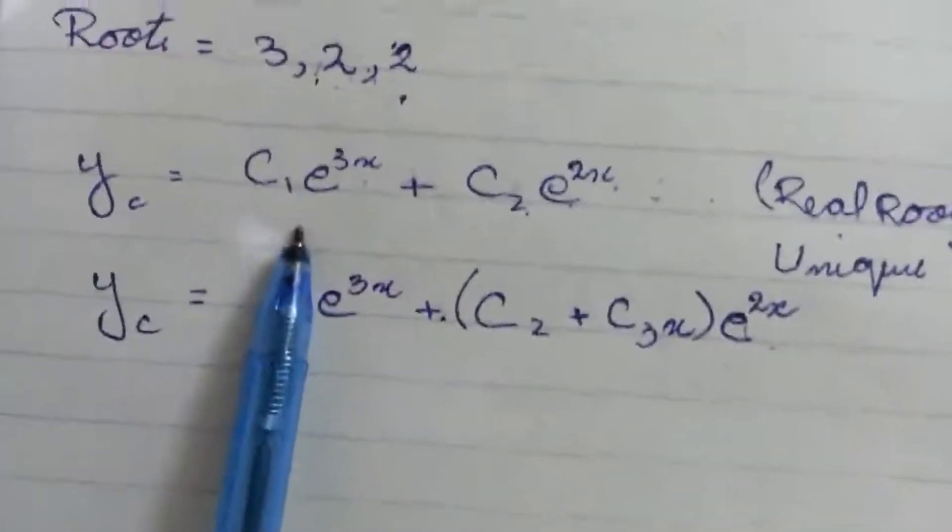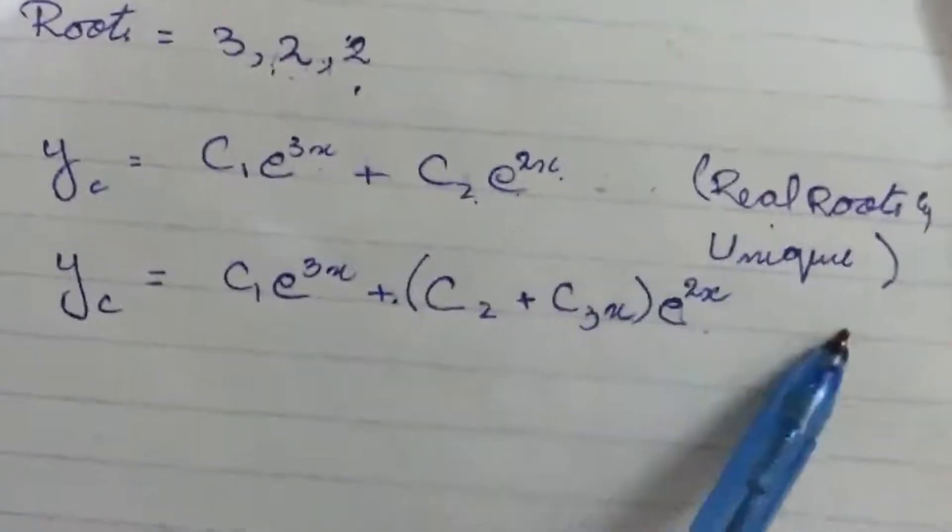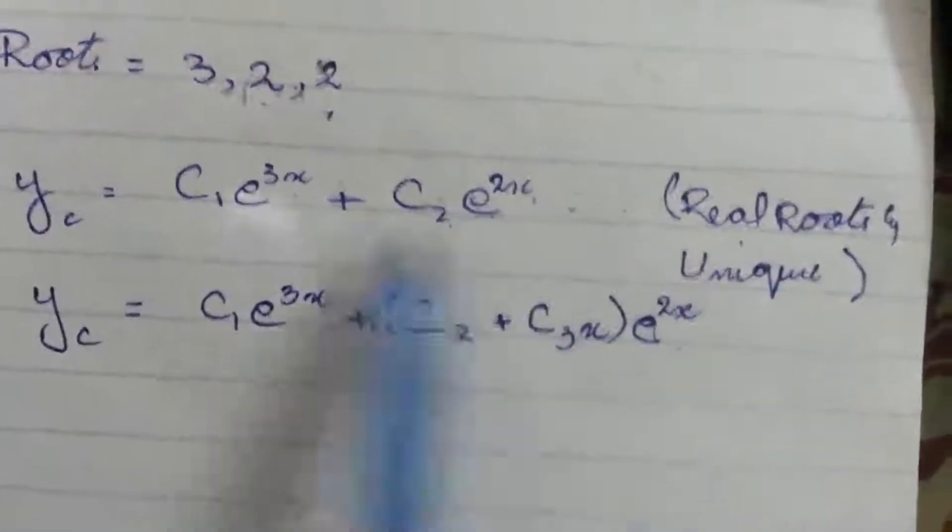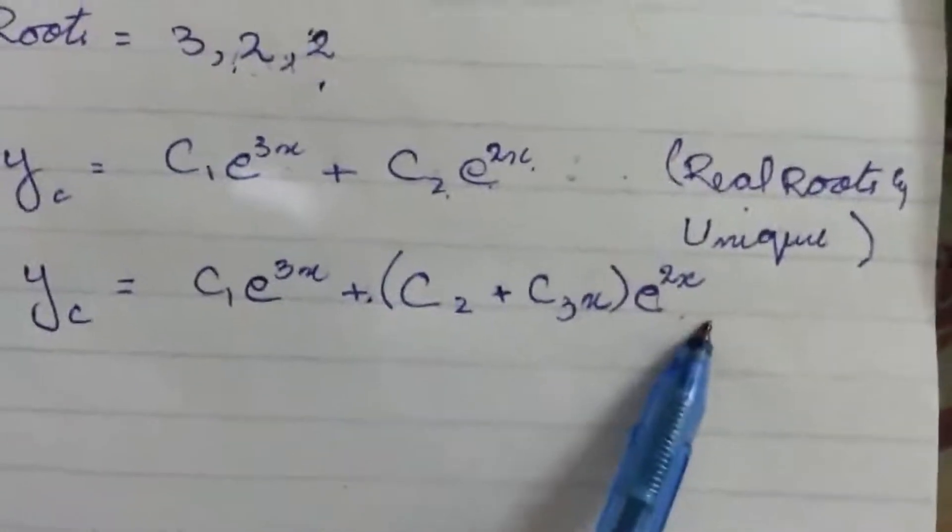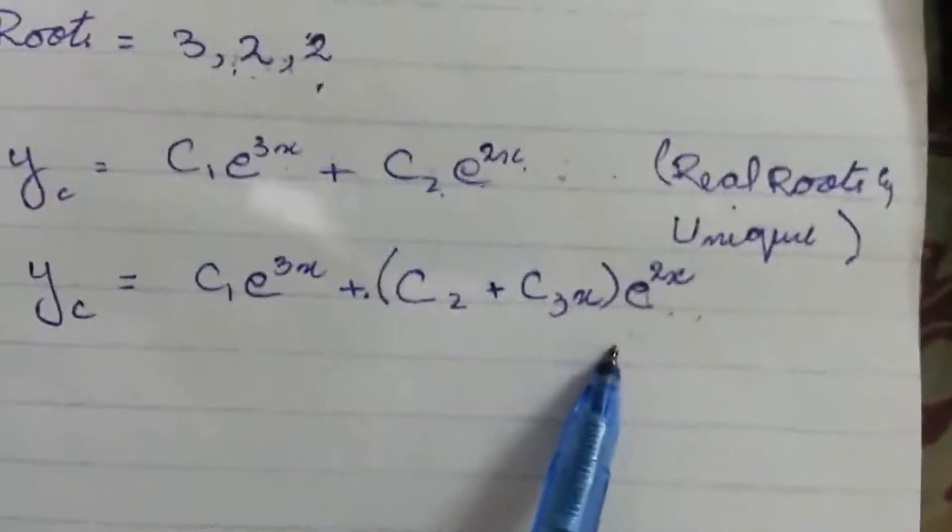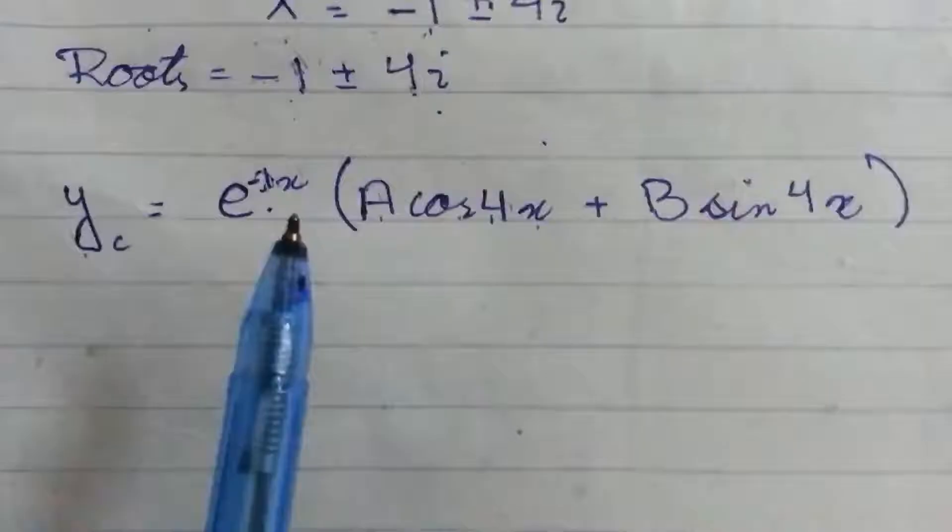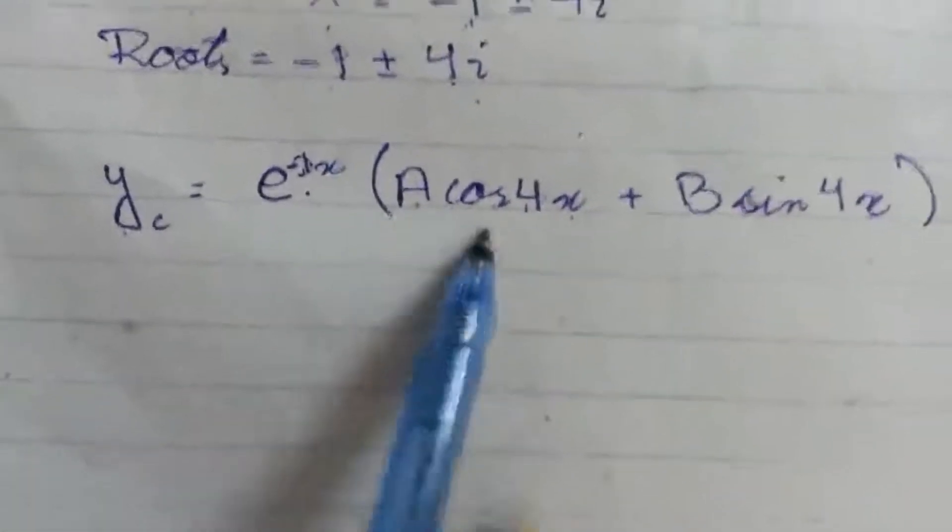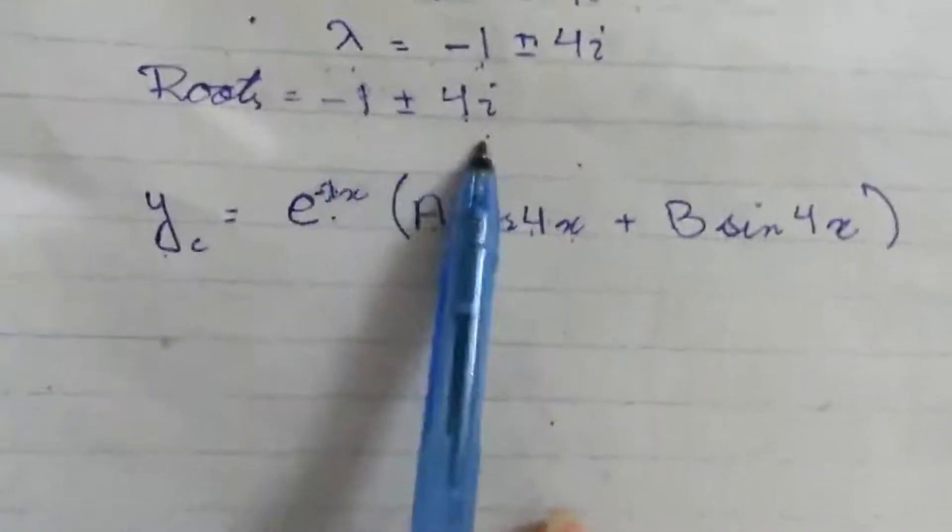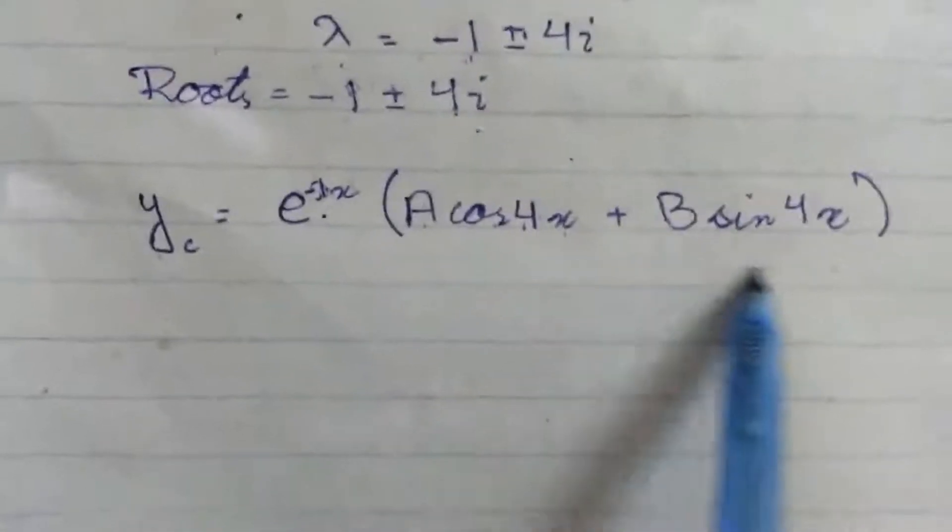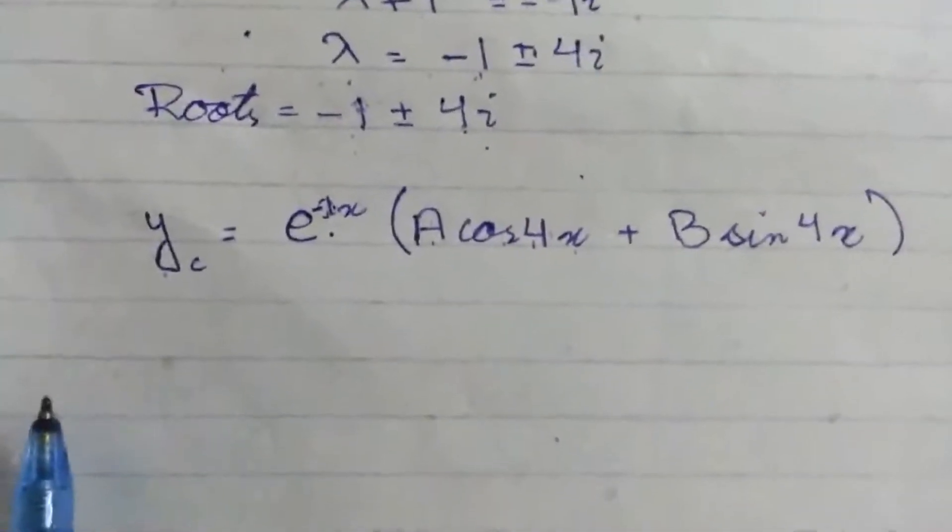So this is what we learned. If we have any real roots which are unique and distinct, we will write yc as this. If we have any real roots but which are repeated, we will write yc like this. And if we have any root which is real plus imaginary, or we can say the complex roots, we will write yc like this. Thank you.